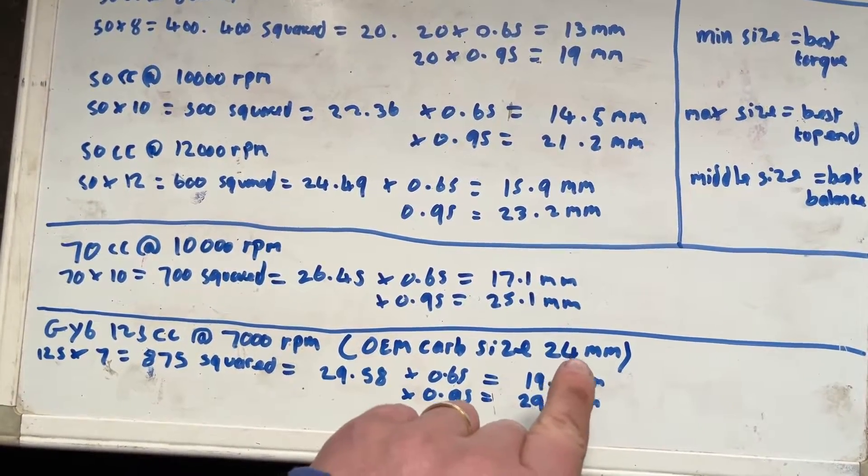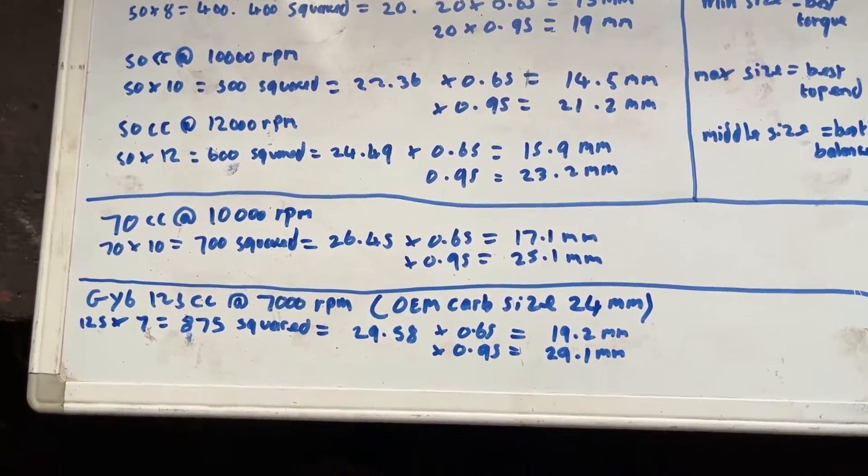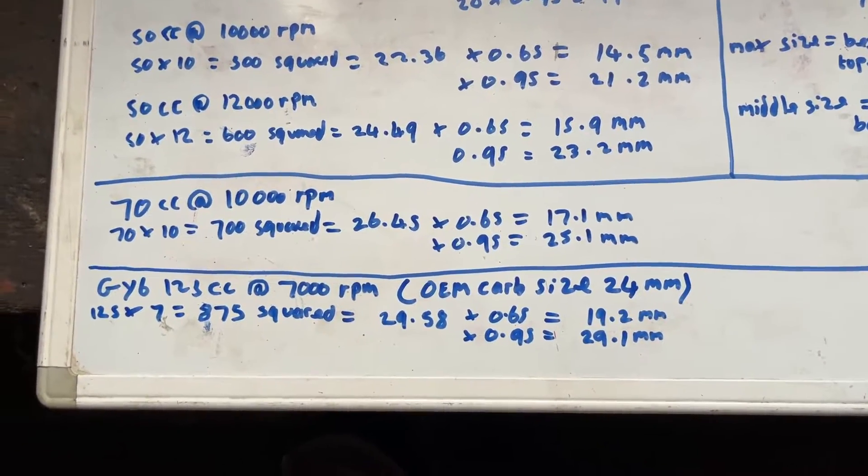So if we then look at our 24, that sits nigh on bang in the middle, which gives it the best possible balance, which is why the manufacturers chose that carb size for that engine.